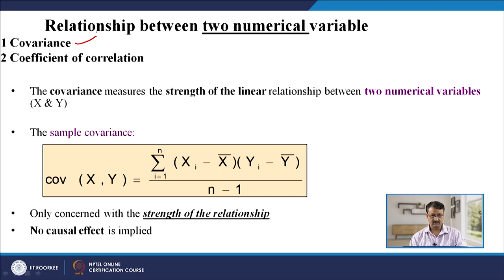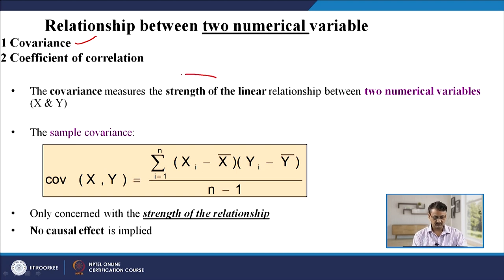Let us move on to the relationship between two numerical variables. What is a variable? Let us say in a class you have 30 students and you have heights and weights of all those students, and you want to find out the relationship between height and weight. This can be done in two ways. The first is by finding covariance between those two datasets — height dataset and weight dataset. Covariance is a measure of the strength of the linear relationship between any two numerical variables.